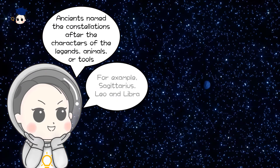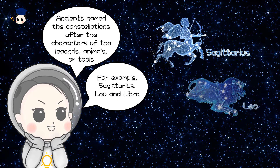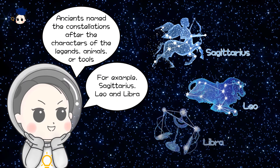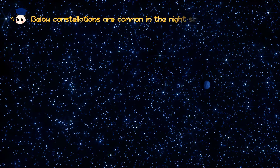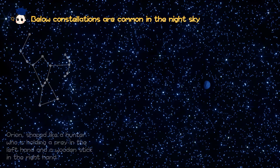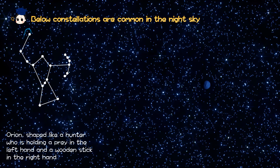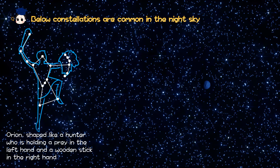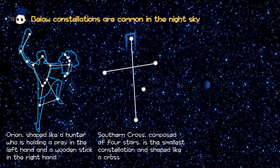For example, Sagittarius, Leo, and Libra. The well-known constellations are coming in the night sky. Orion, shaped like a hunter who is holding a prey in the left hand and a wooden stick in the right hand. Southern Cross, composed of four stars, is the smallest constellation and shaped like a cross.